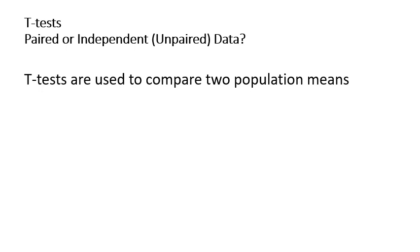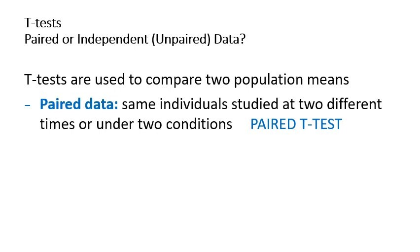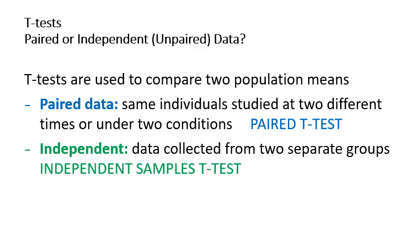When we are interested in comparing two datasets, before diving into the analysis we need to look into whether the data is paired or independent. When comparing two population means we use a t-test. If the data is paired — meaning the same individuals are studied at two different times or under two different conditions — that is a paired t-test, which can be done in Excel or SPSS. If data is collected from two separate independent groups, we use an independent samples t-test.